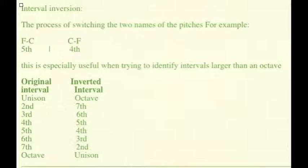Next, we have to talk about interval inversion. An easy example would be a fifth to a fourth. An F to a C is a fifth. But a C to an F would be a fourth.